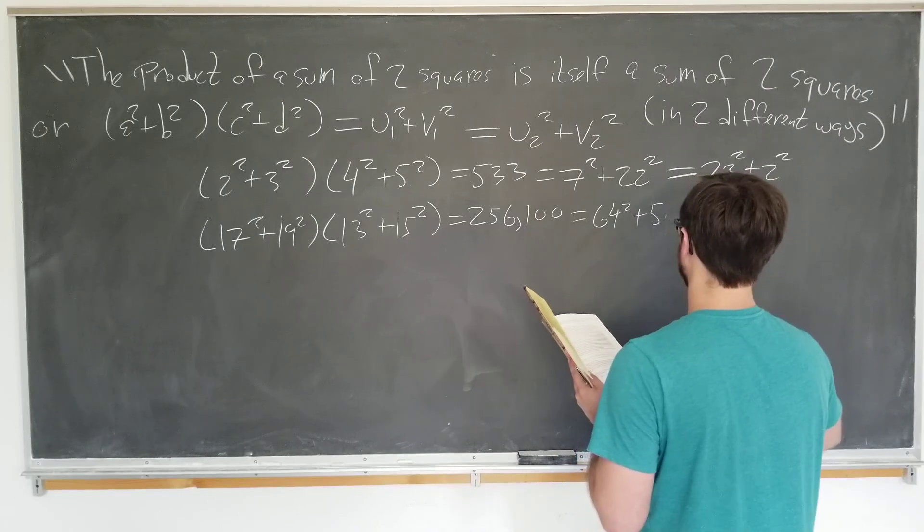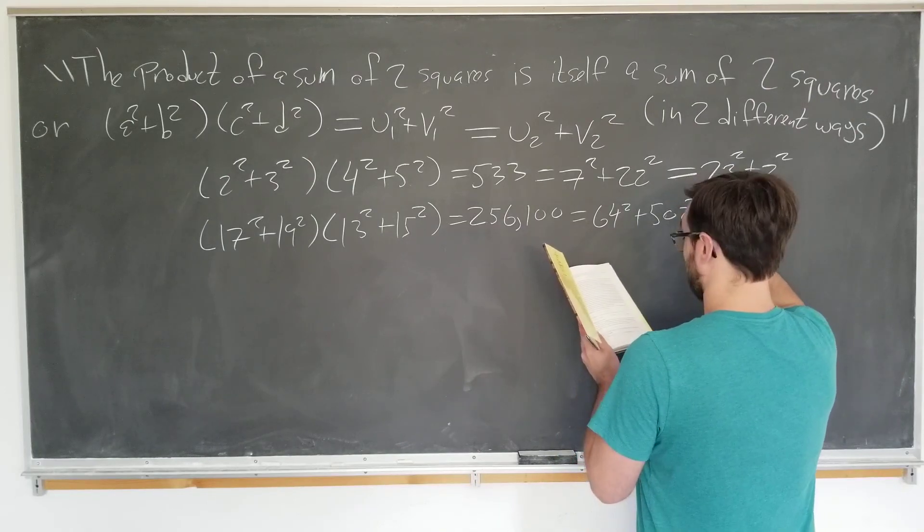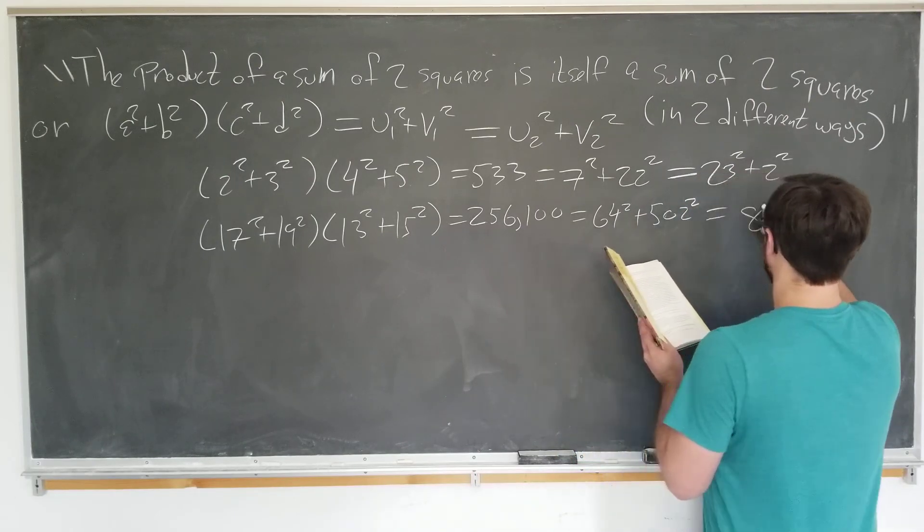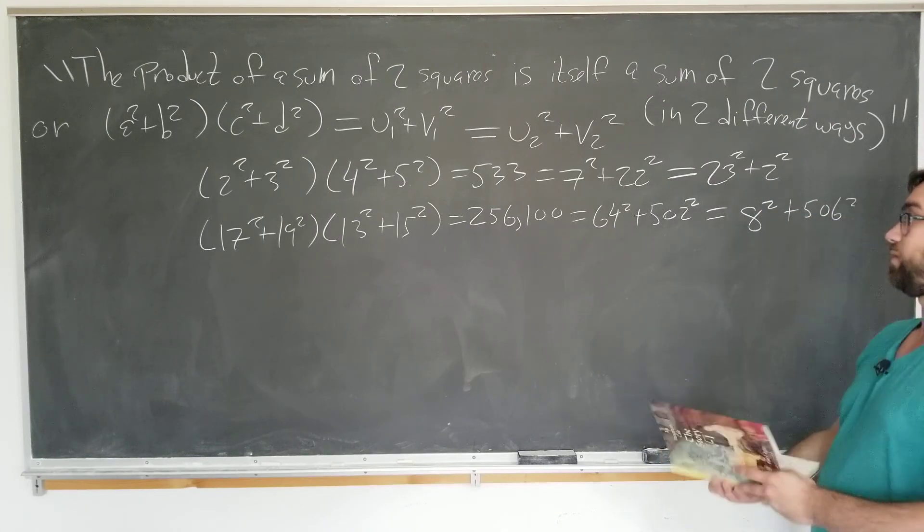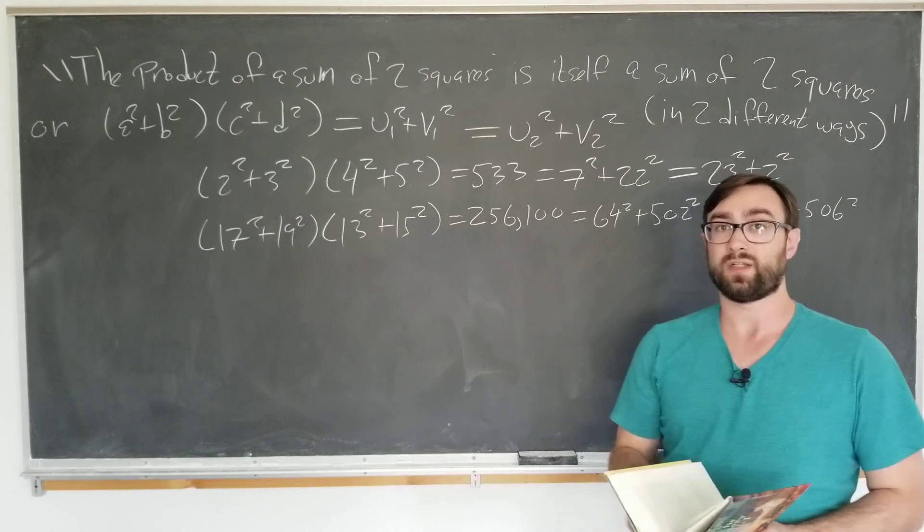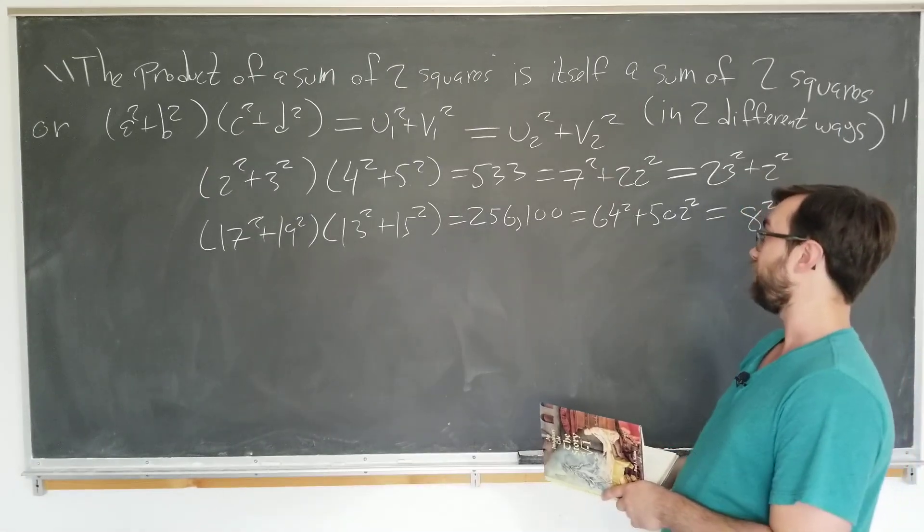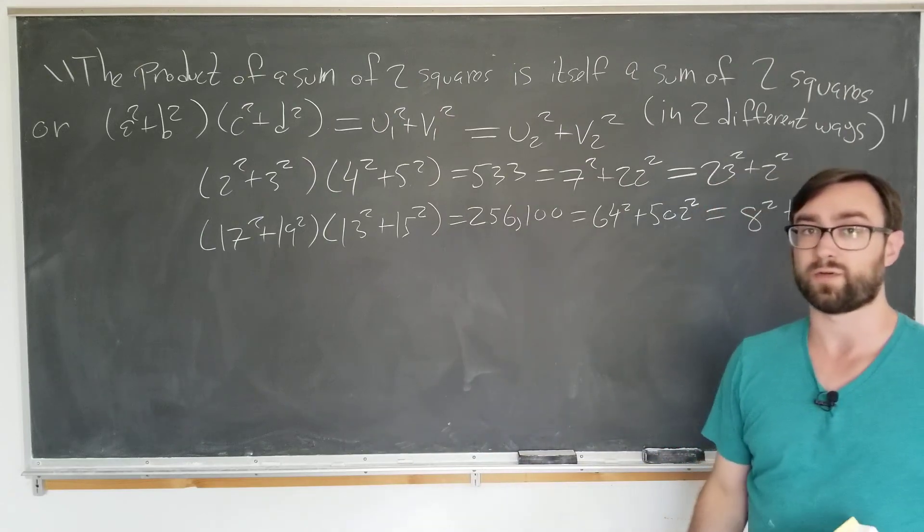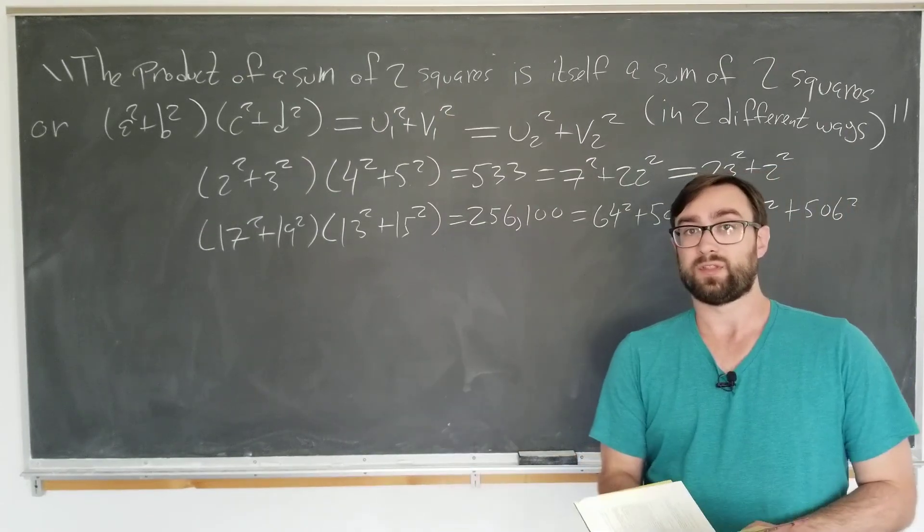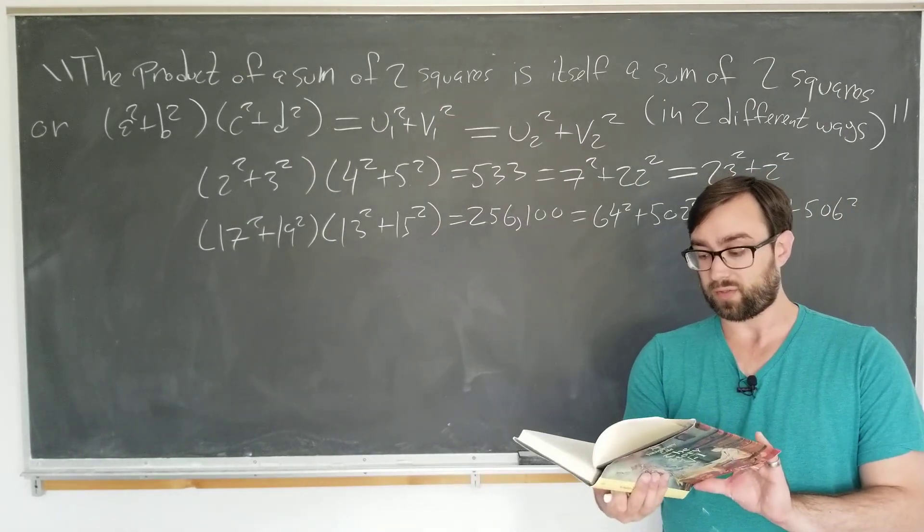There's just so many numbers. Way more numbers than I'm used to. You can also write it as 8 squared plus 506 squared. There's a lot of patterns that you can discover just by plugging numbers into your calculator. I'm not sure if this is the way these were originally discovered.